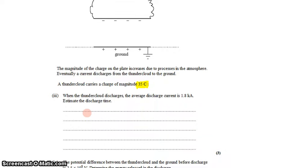We'll use that information to answer part 3. When the thundercloud discharges, the average discharge current is 1.8 kiloamps. We'll estimate the discharge time.